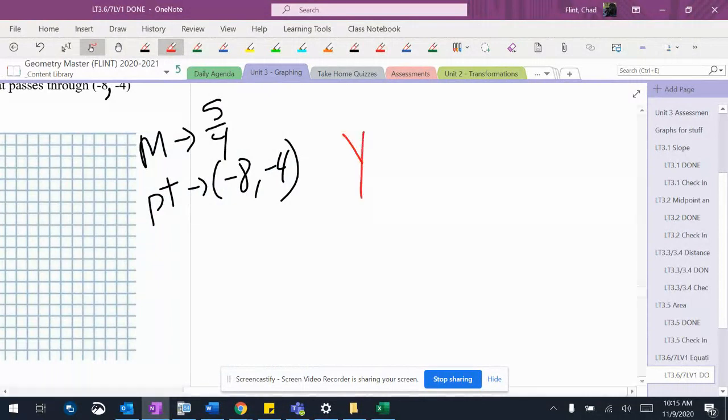I'm going to go ahead and write my formula down: Y minus Y1 equals M times X minus X1.